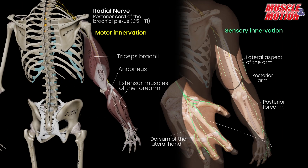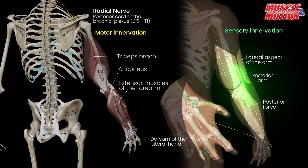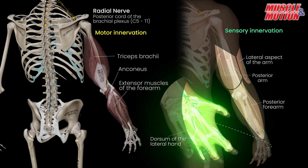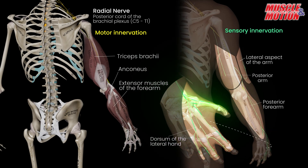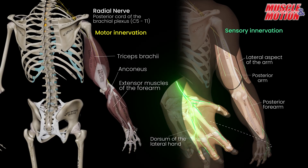In summary, the radial nerve provides motor innervation to the triceps brachii, the anconeus, and all the extensor muscles of the forearm. It also supplies sensory innervation to the skin of the lateral aspect of the lower arm, posterior arm, the posterior forearm, and the dorsum of the lateral hand, including the dorsal aspects of the thumb, index, middle finger, and the radial half of the ring finger.